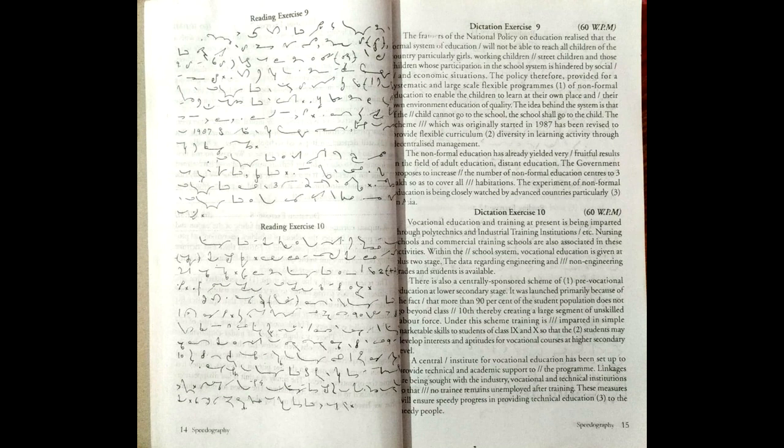The framers of the National Policy on Education realized that the formal system of education will not be able to reach all children of the country, particularly girls, working children, street children, and those children whose participation in the school system is hindered by social and economic situations.